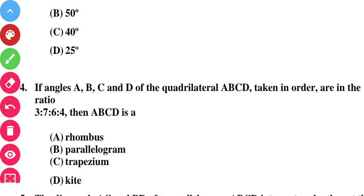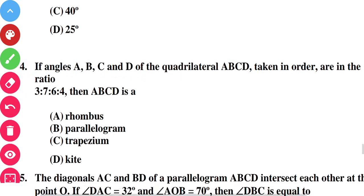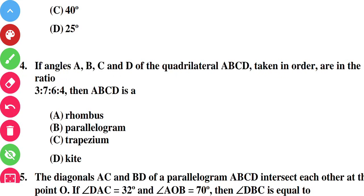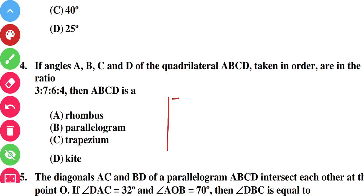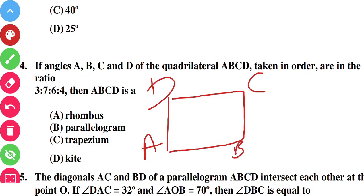Question number four: the angles of quadrilateral ABCD taken in order are in the ratio 3:7:6:4. So the angle values are 3x, 7x, 6x, and 4x respectively.